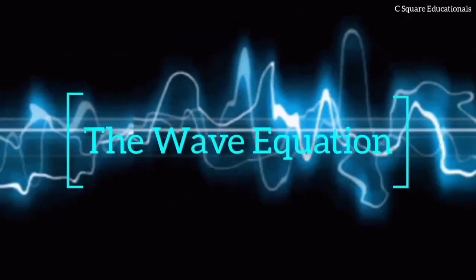The wave equation is a second-order linear partial differential equation for the description of waves or standing wave fields, as they occur in classical physics, such as mechanical waves like water waves, sound waves, and seismic waves, or electromagnetic waves, including light waves.